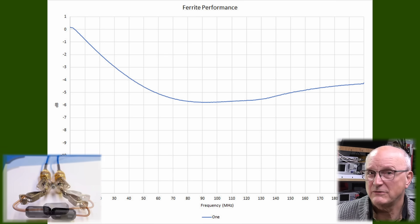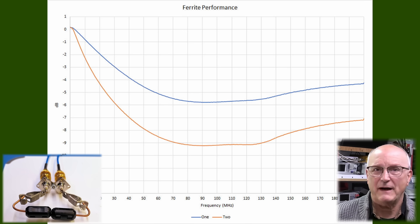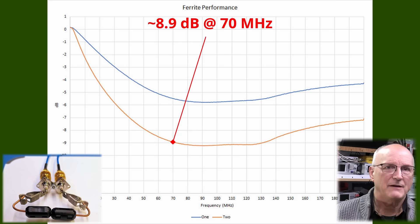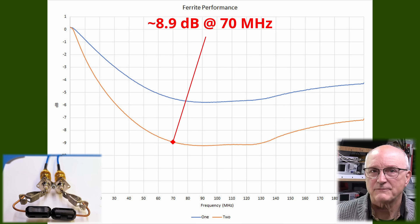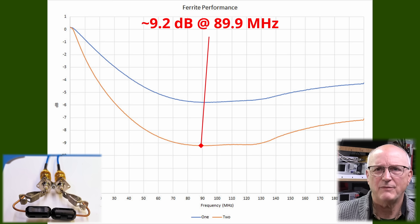Now what would happen if we put two of them on? Well, let's see. We have about the same kind of curve, but now we see about 2.2 dB benefit at 10 MHz, with 8.9 dB at 70 MHz. I find the best benefit of 9.2 dB at 89.9 MHz.